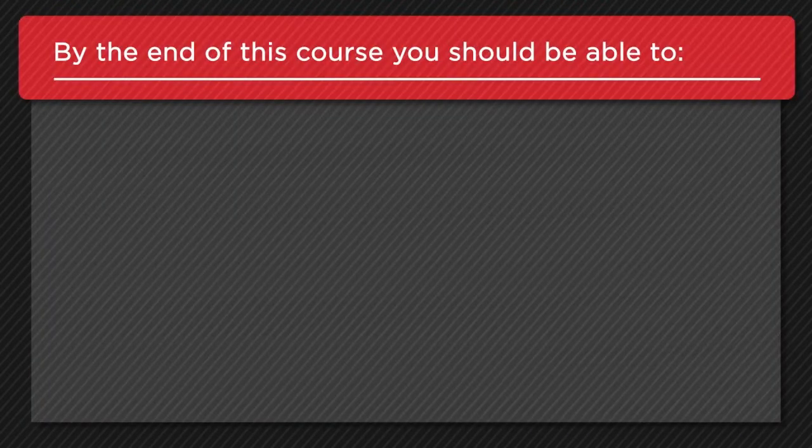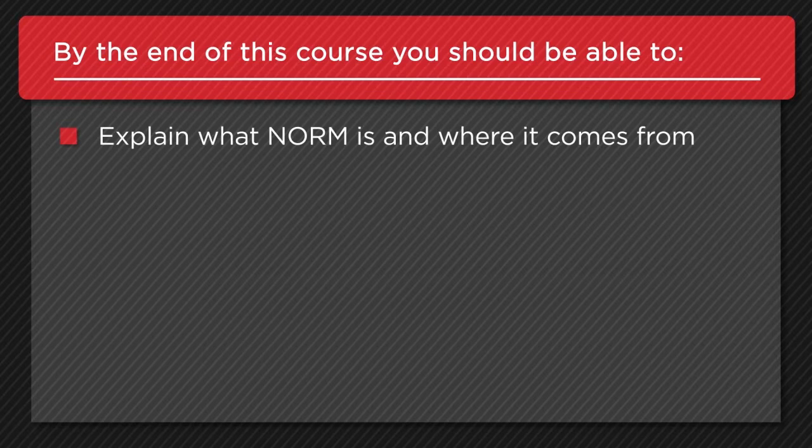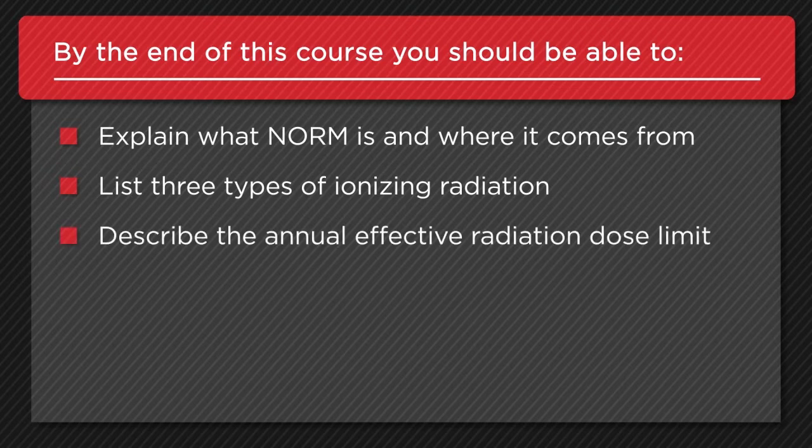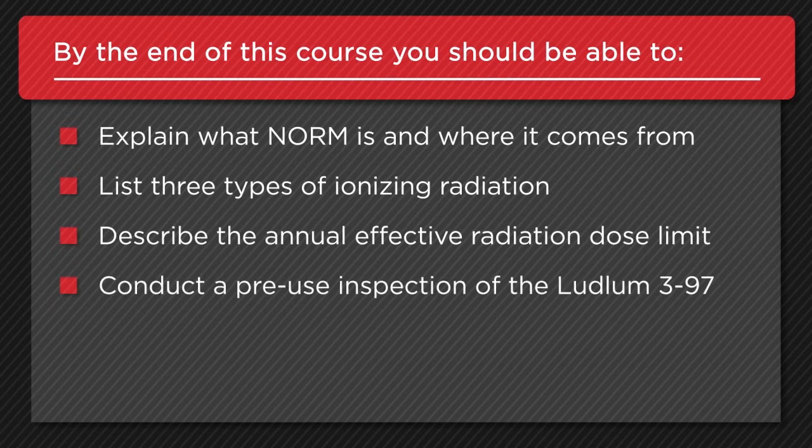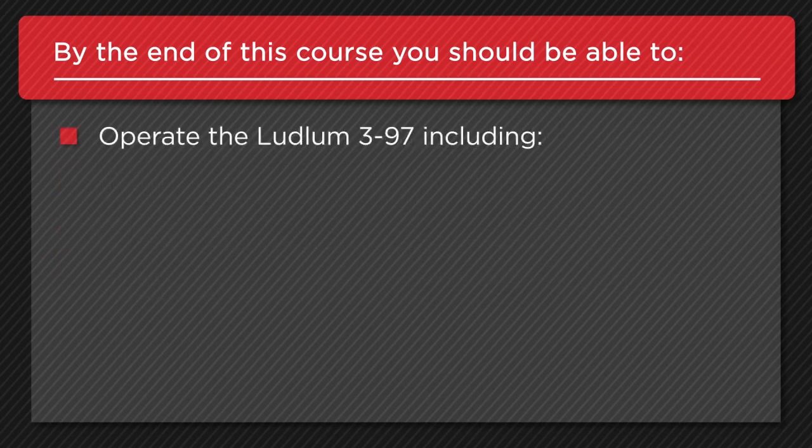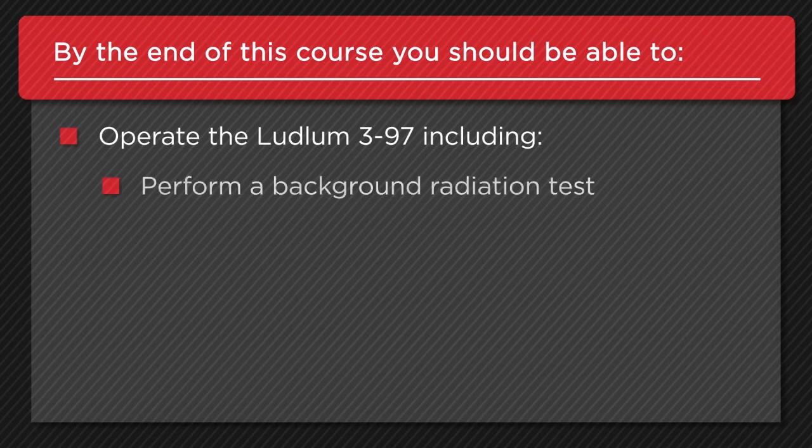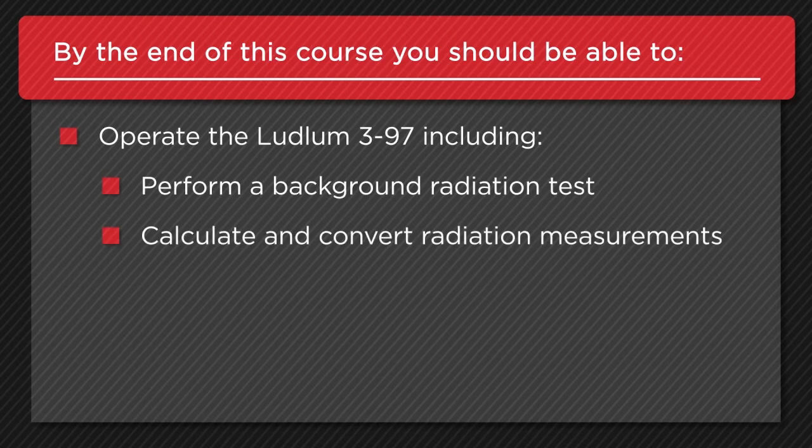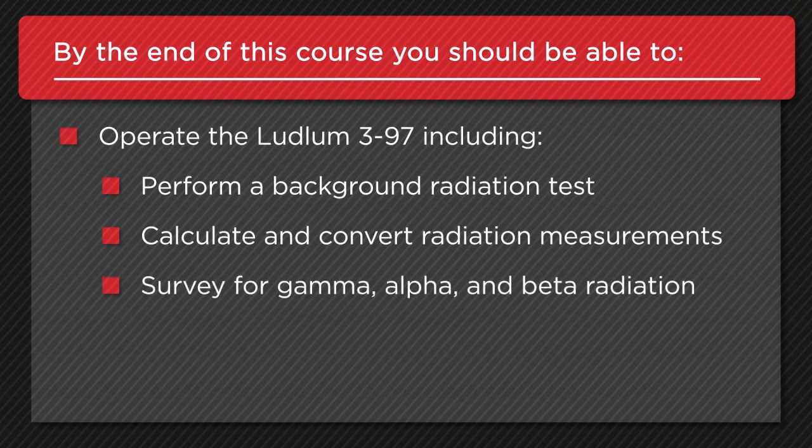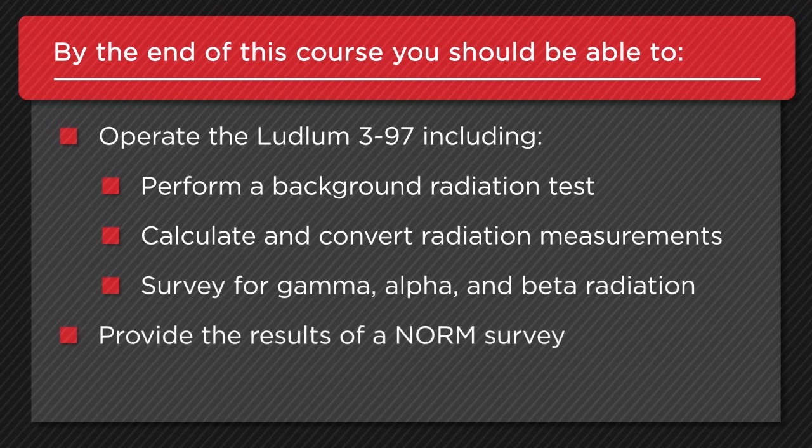By the end of this course, you should be able to explain what NORM is and where it comes from, list three types of ionizing radiation, describe the annual effective radiation dose limit, conduct a pre-use inspection of the Ludlum 397, operate the Ludlum 397 including perform a background radiation test, calculate and convert radiation measurements, survey for gamma, alpha, and beta radiation, and provide the results of a NORM survey.